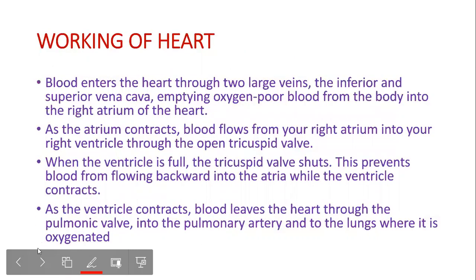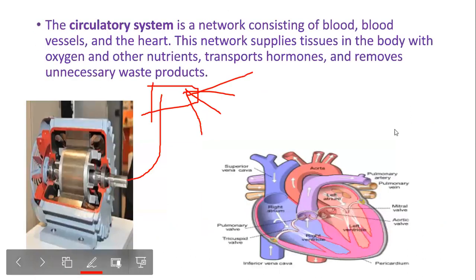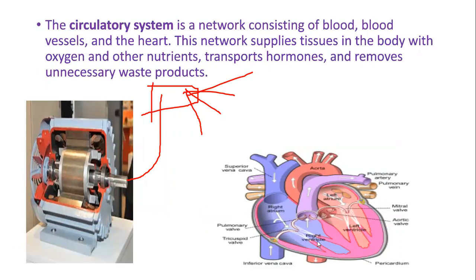Now, looking at the working of the heart using this diagram: here we have the right atrium, right ventricle, left atrium, left ventricle, pulmonary artery, and pulmonary vein. As mentioned in previous lectures, arteries carry pure blood and veins carry impure blood — except for the pulmonary artery, which carries impure or deoxygenated blood, whereas the pulmonary vein carries oxygenated blood.